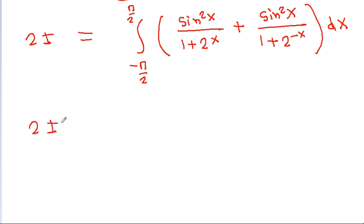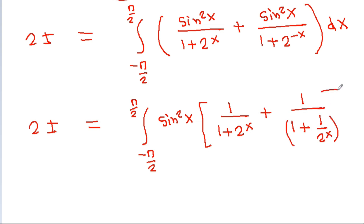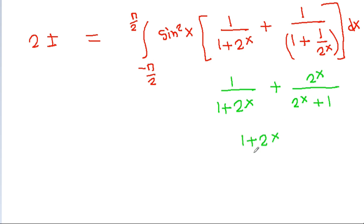So 2i equals the integral from minus pi by 2 to pi by 2, and we can take sine square x common. We get 1 by (1 plus 2 power x) plus 1 by (1 plus 2 power minus x). Now 1 by (1 plus 2 power minus x) equals 2 power x by (2 power x plus 1), so the sum 1 by (1 plus 2 power x) plus 2 power x by (1 plus 2 power x) equals 1.